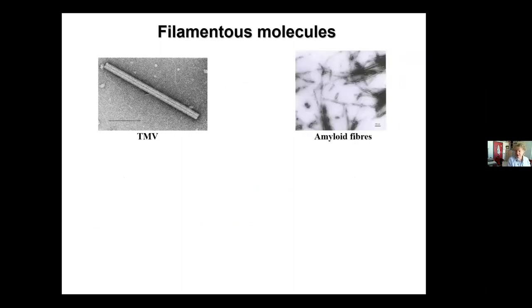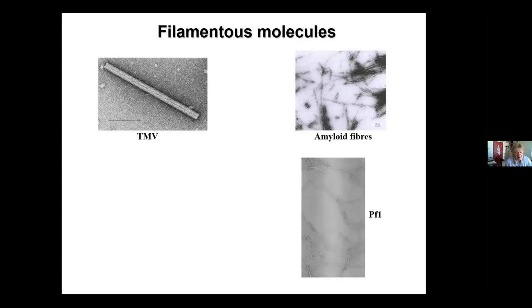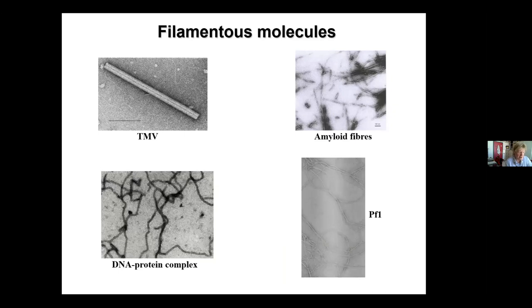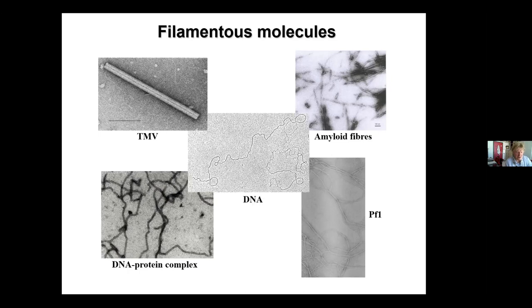Amyloid fibres - many of you will know about amyloid fibres. They're a hot topic, depositions deeply associated with particular pathologies, very important in terms of our increasing lifespans and different pathologies associated with longer lifetimes. PF1 is a filamentous bacteriophage. This is a DNA-protein complex - DNA complexed to the RecA protein, which is involved in genetic recombination. And there's DNA itself, where double-stranded material becomes single-stranded in places and loops out.